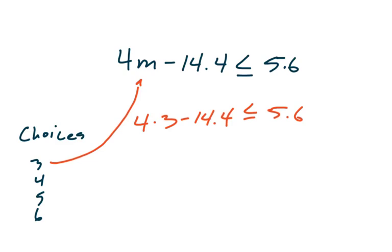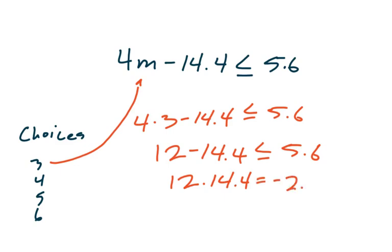Well, 4 times 3 is only 12. And 12 minus 14.4, is that actually going to be less than 5.6. Well, if I check my math, 12 minus 14.4 turns out to be negative 2.2.